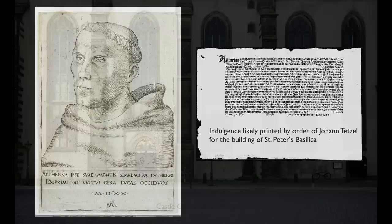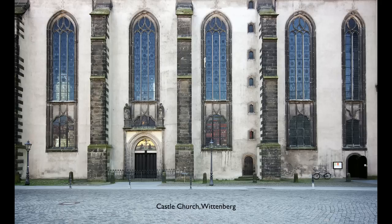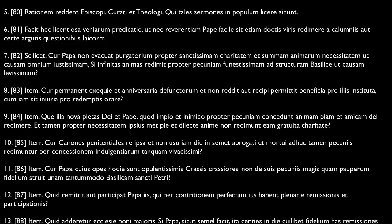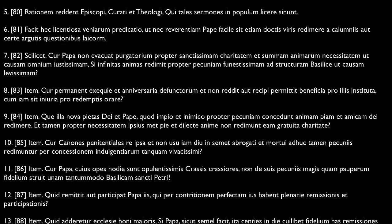Luther took these issues very seriously and did what any good doctor of theology would do — he wrote out a series of arguments. In his case, he posted them, at least according to tradition, to the doors of the castle church in Wittenberg: 95 theses, 95 arguments that took issue primarily with the selling of indulgences. Luther sent them to the local archbishop and they made their way to Rome. And so we have the beginnings of the Protestant Reformation. The word Protestant is formed out of the word 'protest,' and Reformation out of the word 'reform' — so this was a protest against the church and an attempt to reform it.